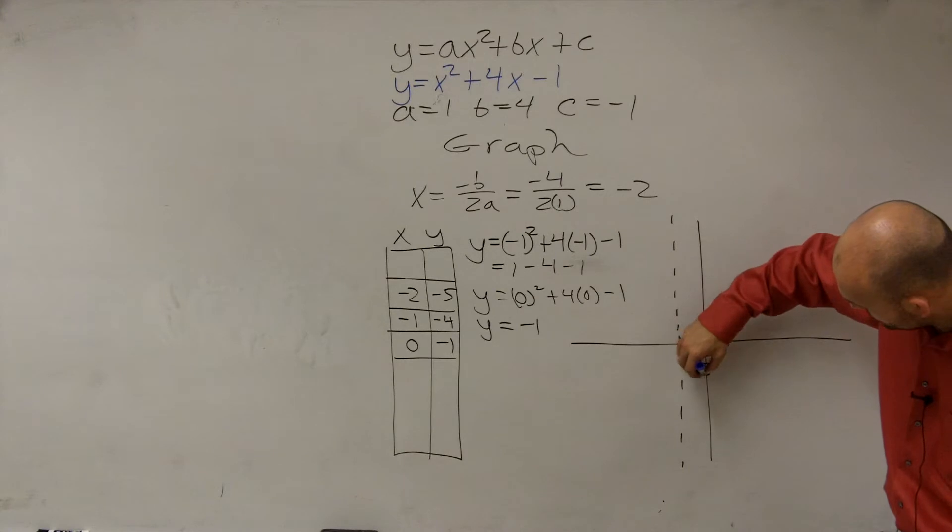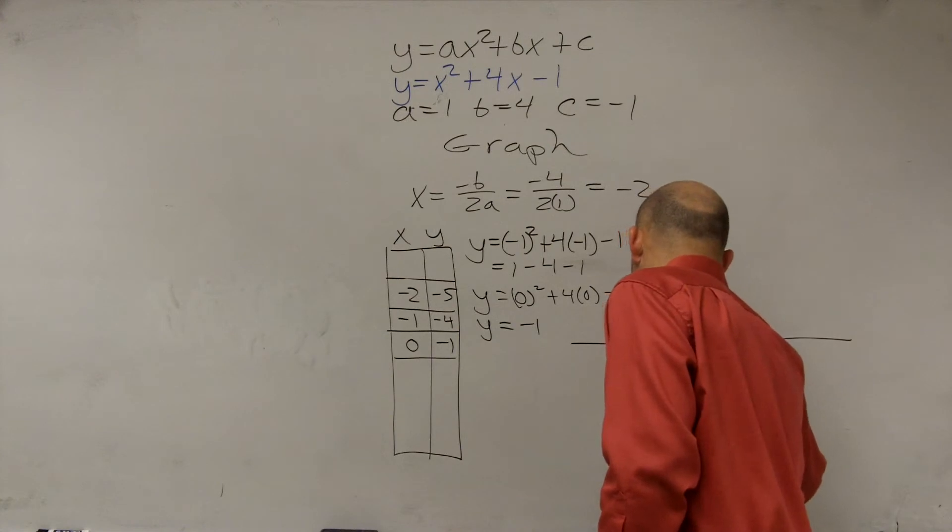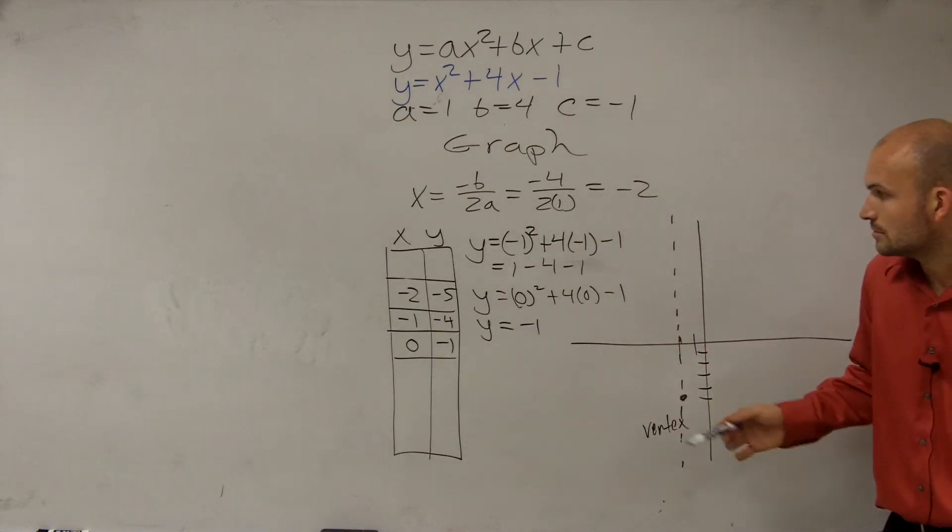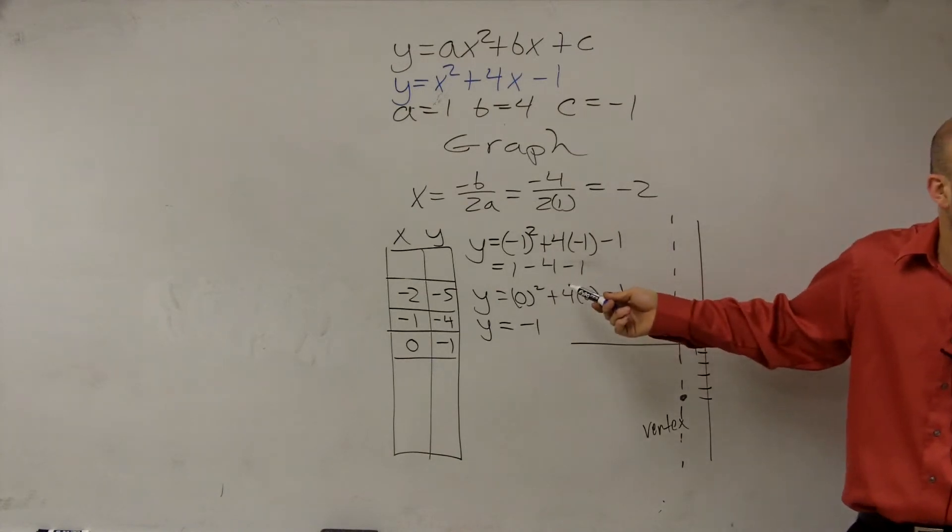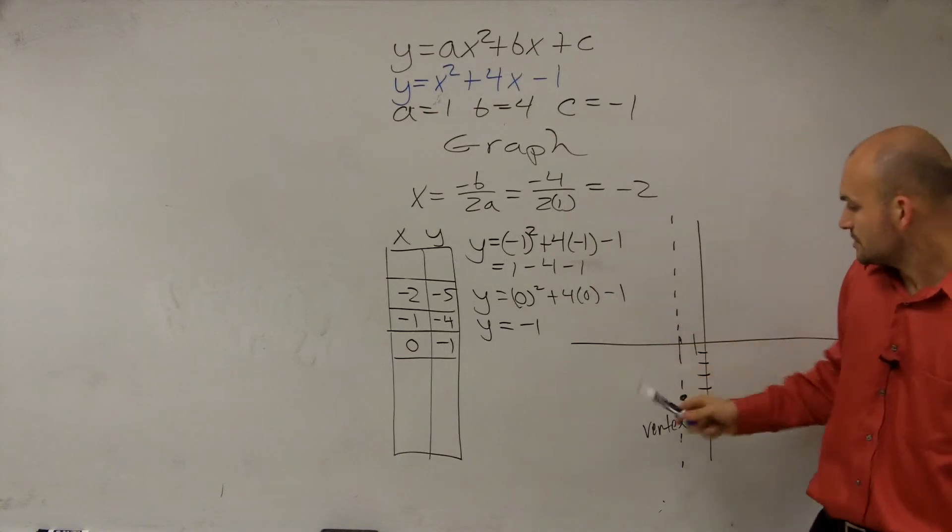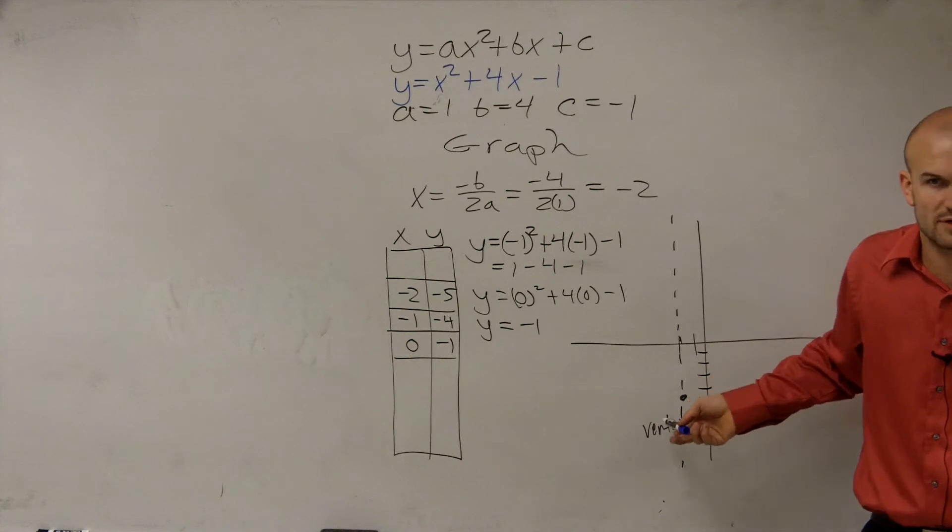Negative 1, 2, 3, 4, 5. That's the vertex. Negative 1. Negative 1 minus 4 is negative 3. Negative 3 minus 1 is negative 4. So now you have the vertex, right? Because that was at negative 2, 5. We already wrote down that was our answer for the vertex.